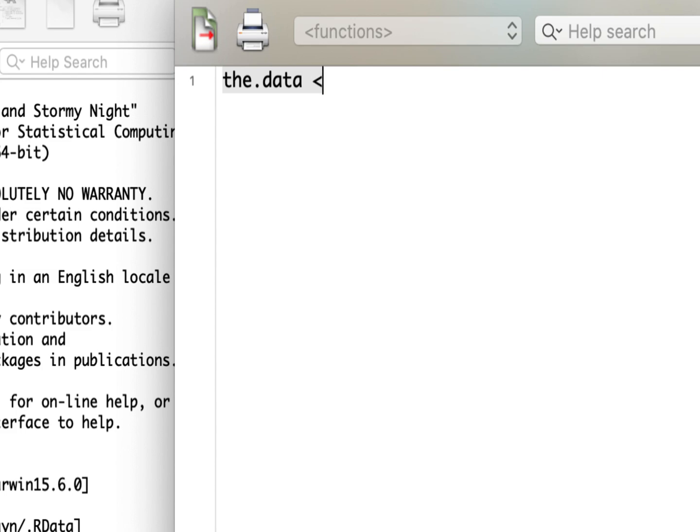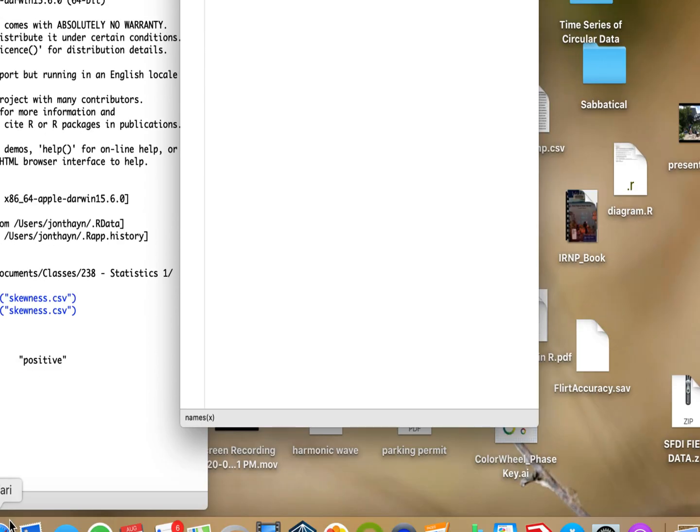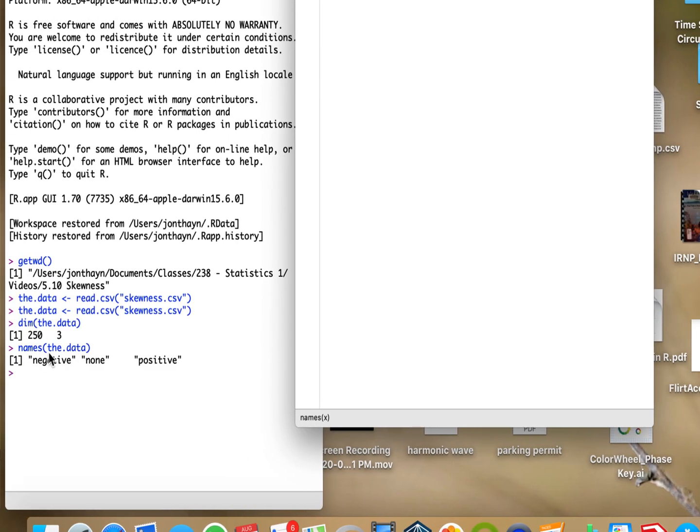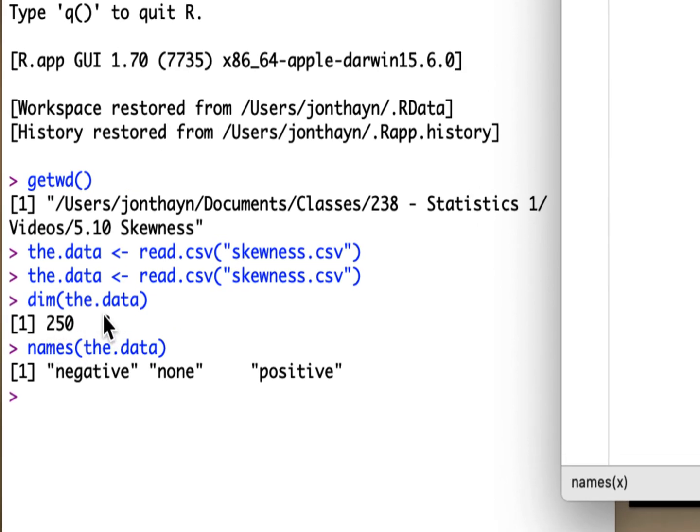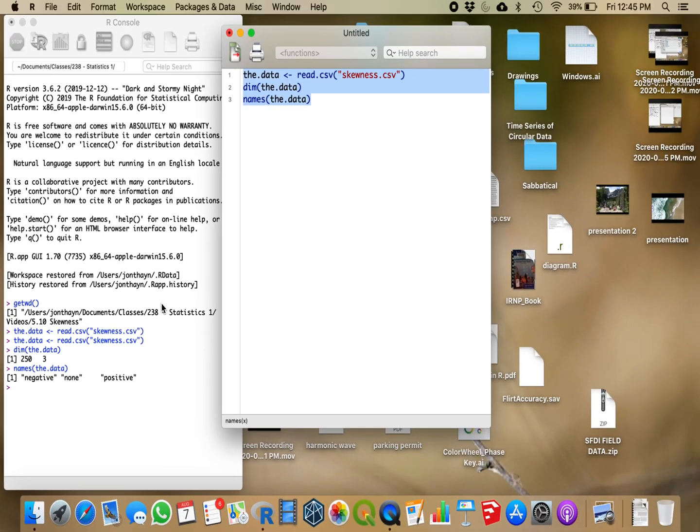So I'm going to open these data. I'll just call them the data using the read.csv command. And I know that I named it skewness.csv. So I'll open that up. And we can take a look at the dimensions of the data, and let's take a look at the names of the variables. So highlight that and send all that over. So here I've opened up my data set. I have 250 observations on three variables. And my variables are negative, none, and positive. So this variable has negative skew, this has no skew, and this has positive skew.